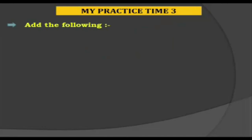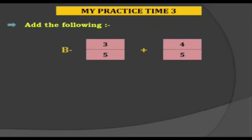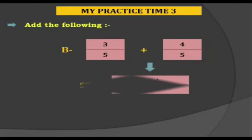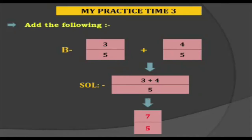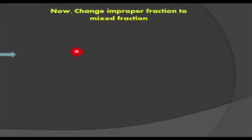Add the following — question number b: 3 by 5 plus 4 by 5. We can see these are like fractions because the denominators are the same. So we add only the numerators: 3 plus 4 equals 7, giving us 7 by 5.